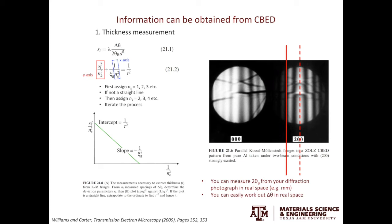If it does not form a straight line, then we'll assign Nk as 2, 3, and 4. We'll repeat the process until the three S values will form a straight line. Once the straight line is formed, the T value can be identified and you will know the foil thickness.